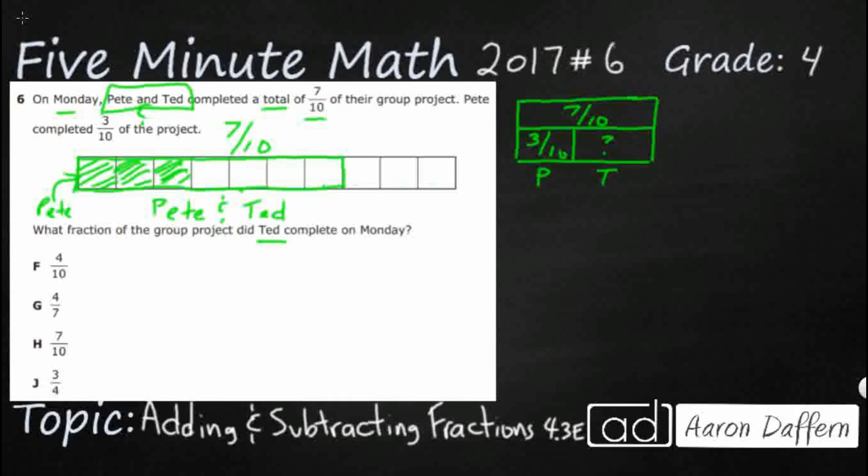Which means you see this blank. I've got this blank right here. This blank I guess needs to be Ted. Because if you put Pete and Ted together you should get seven tenths. Pete here has three tenths.